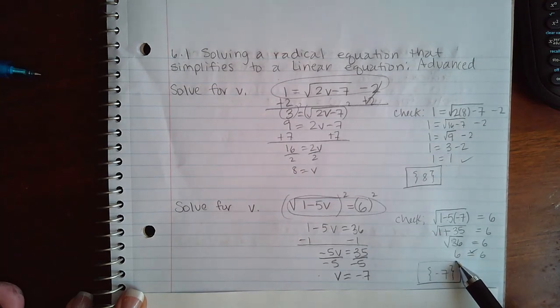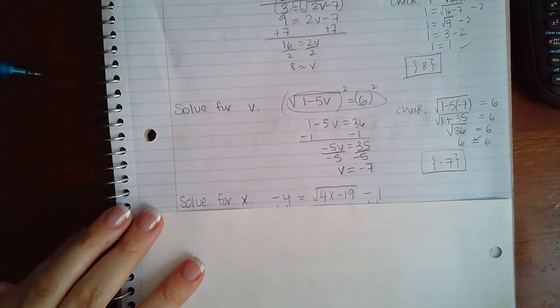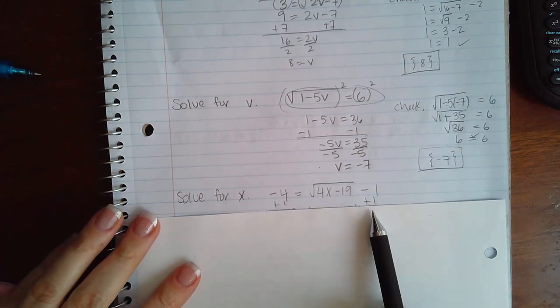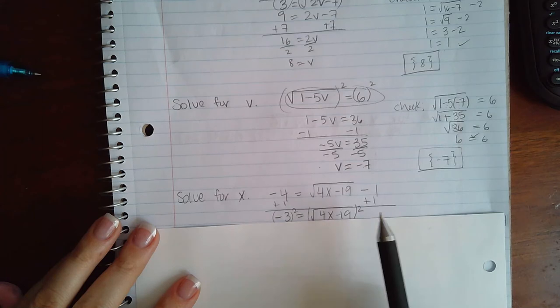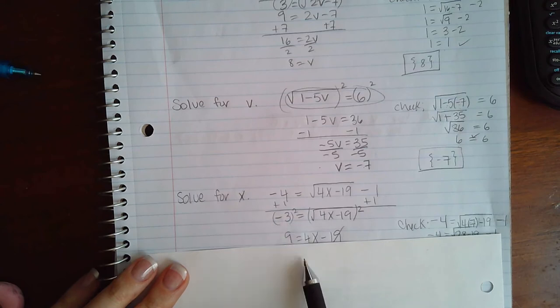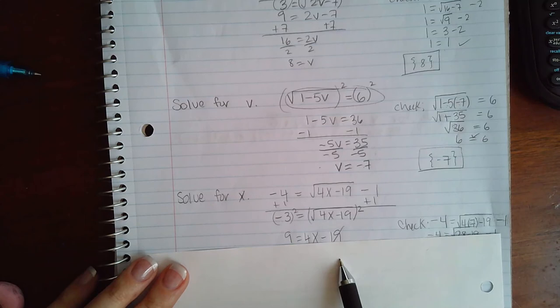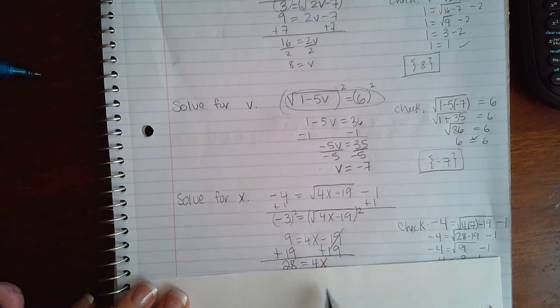Now here we did have to isolate the radical, so I added 1 to both sides so that I got negative 3 equals the square root of 4x minus 19. To get rid of the square root, we applied the square power, so then we get 9—negative 3 times negative 3 is positive 9—and over here we just get the 4x minus 19 that was inside the radical. To continue to solve for x, we add 19 on both sides, we get 28 equals 4x, and then divide by 4 on both sides, we get that x equals 7.